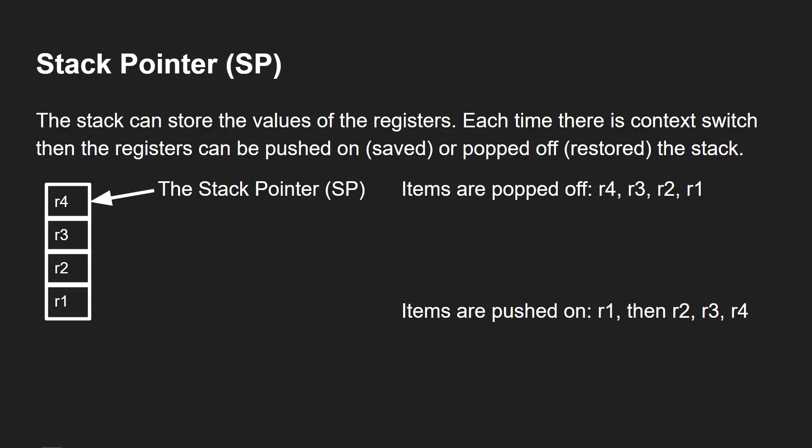In a context switch, you want to save the registers — that means push them onto the stack. And when you come back and want to restore, you pop them off the stack. So you might push R1, R2, R3, R4, and then pop off R4, R3, R2, R1, and your program can carry on because all those registers have been restored to their original value. So you can have an area of memory — the stack — where you stack up the registers, and then pop them off again. That's a good way of restoring.